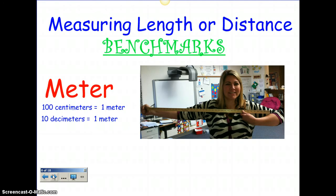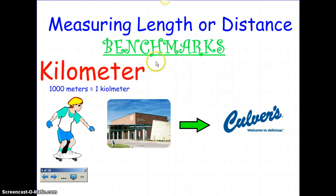A meter — remember when we talked about how long a yard is? A yard is from your fist to your shoulder. Well, a meter is from your fist to your shoulder and a little bit more, so that would be one meter. Ten decimeters equal a meter, and one hundred centimeters equal a meter. If you're measuring length or distance in kilometers, one thousand meters is one kilometer. A kilometer is about walking from our school to Culver's — it's a distance that will take some time to walk, so if you're measuring something in kilometers, you know it's something really long.